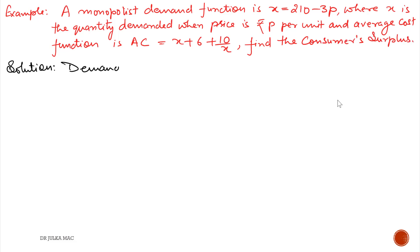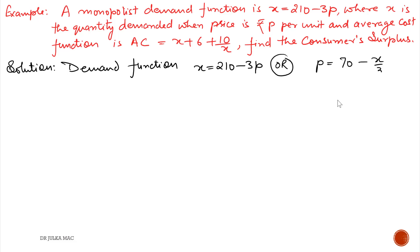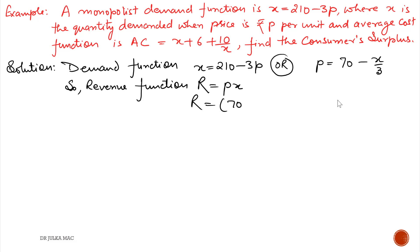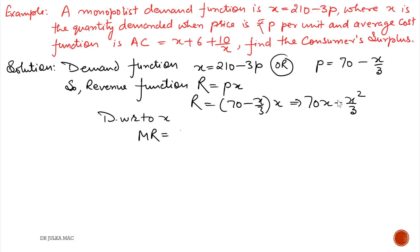The demand function is given as x = 210 − 3p, which can be rewritten as p = 70 − x/3. The revenue function R = p·x = (70 − x/3)·x = 70x − x²/3. Differentiating with respect to x, the marginal revenue is MR = 70 − 2x/3.